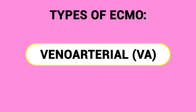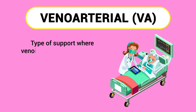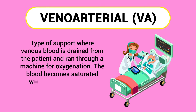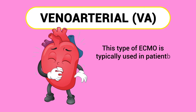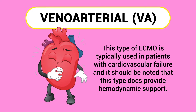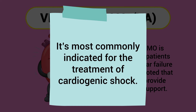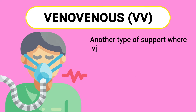The two most common types of ECMO include veno-arterial and veno-venous. Veno-arterial ECMO is a type of support where venous blood is drained from the patient and run through a machine for oxygenation. The blood becomes saturated with oxygen and is returned to the patient's body via arterial circulation. This type is typically used in patients with cardiovascular failure and does provide hemodynamic support — it's most commonly indicated for the treatment of cardiogenic shock.